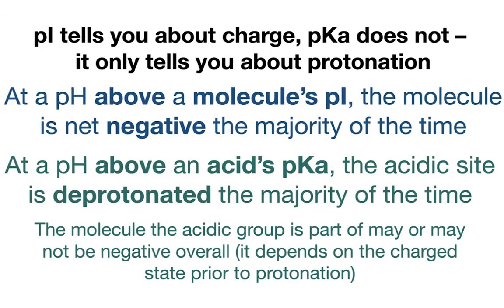Conversely, at a higher pH, there are going to be fewer protons available. If there are fewer protons available, the molecules become more likely to give up those protons — they become less likely to have a proton. If you're at a higher pH, you're less likely to find those protons, and that's where the positivity is coming from. But that is happening at these pKa levels, not the pI level.